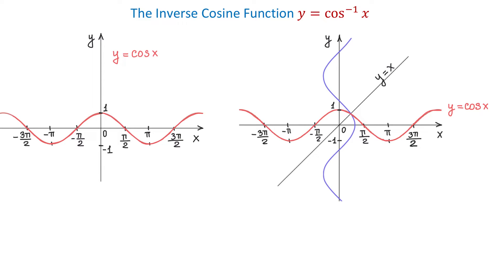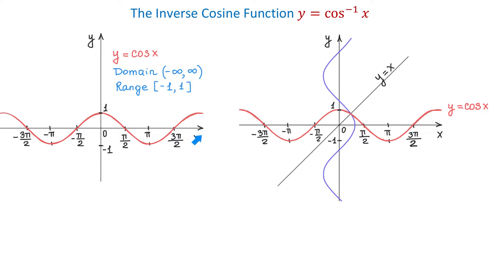In this video we will talk about the inverse cosine function. In the figure to the left we have the graph of y equals cosine of x. The domain of this function is the interval from negative infinity to positive infinity, and the range is the interval from negative 1 to positive 1 inclusive.